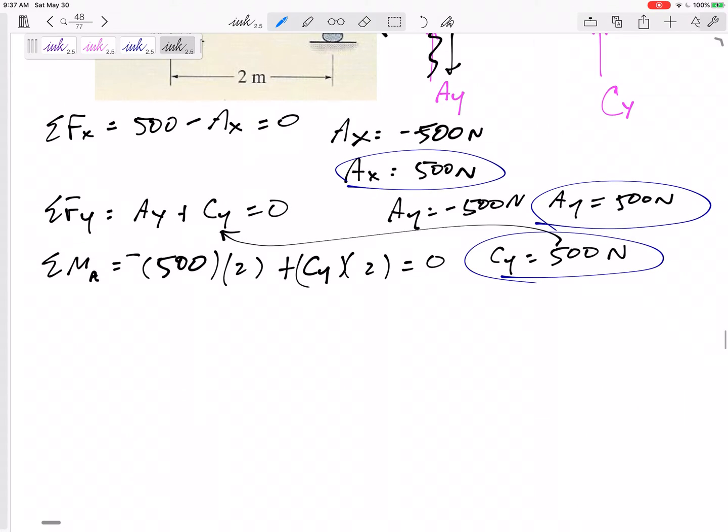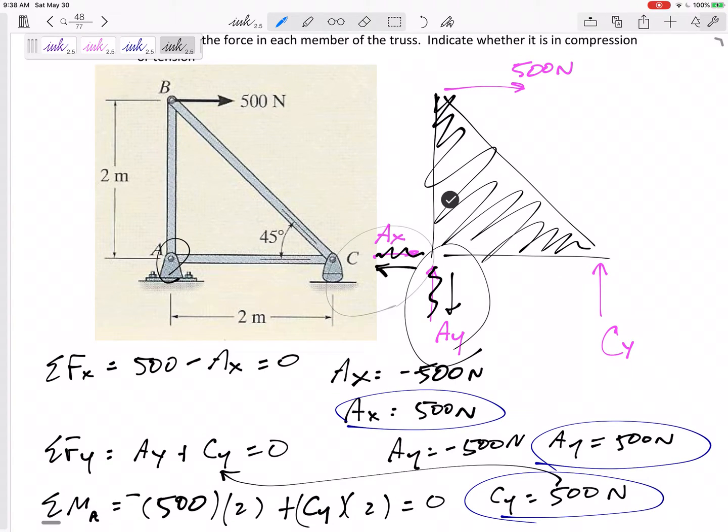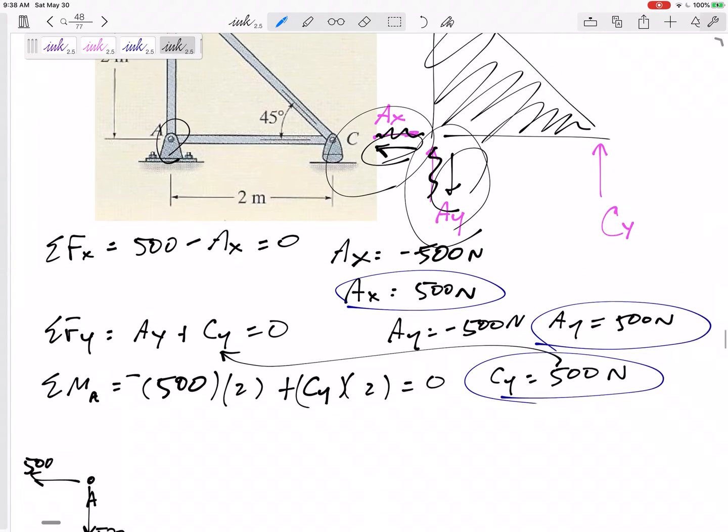We're gonna say I'm gonna look at A, I'm gonna open it up, I'm gonna look at that joint. So let's draw a dot right here, that is A. If there are any forces like I just calculated, there was an Ax and an Ay of 500 to the left, 500 down. So let me draw that. I've got 500 newtons to the left, I've got 500 newtons down.